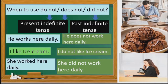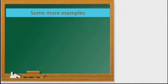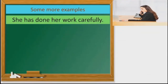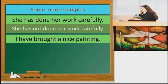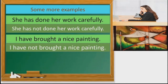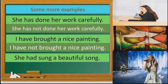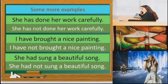Some more examples. 'She has done her work carefully' becomes 'She has not done her work carefully.' Children, you can see we have used 'not' after the helping verb — here 'has' is the helping verb. Next: 'I have brought a nice painting' becomes 'I have not brought a nice painting.' Next: 'She had sung a beautiful song' becomes 'She had not sung a beautiful song.' So children, 'not' is used after the helping verb.